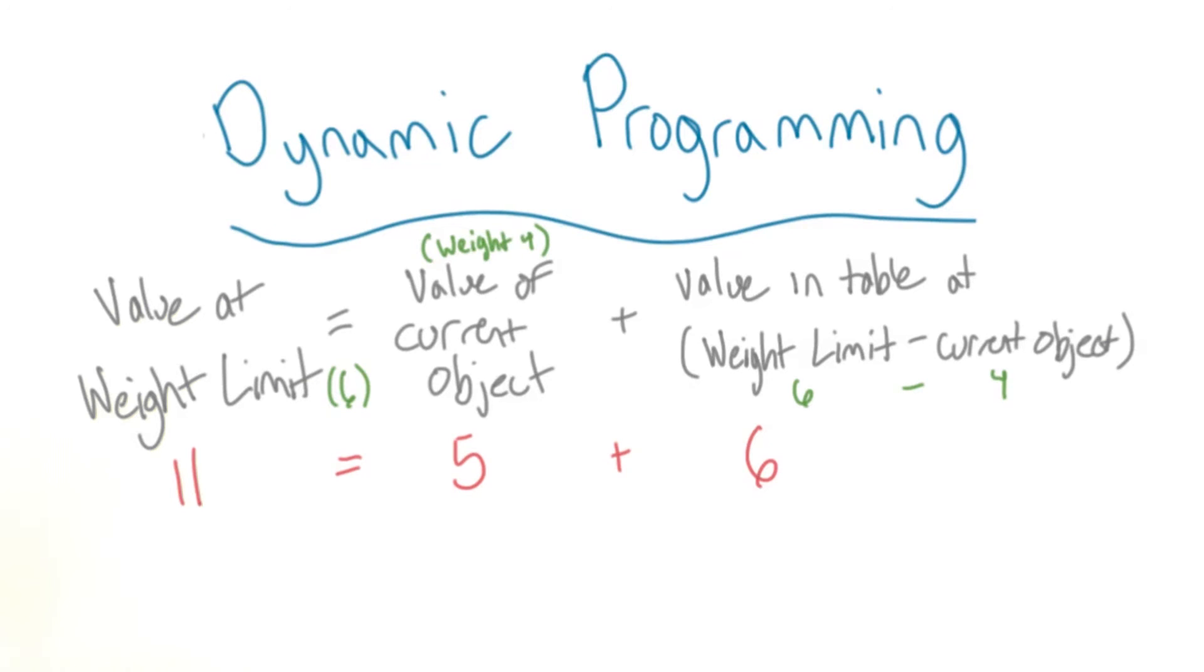Another feature of a dynamic programming solution is an equation used at each step as you add complexity. For us, the equation looks something like this.